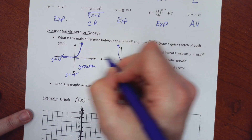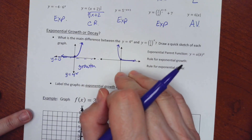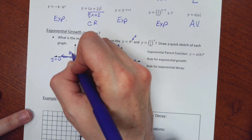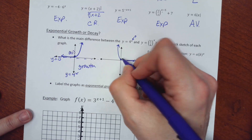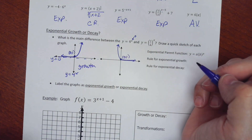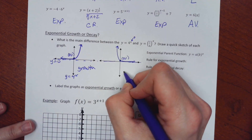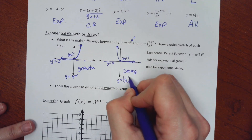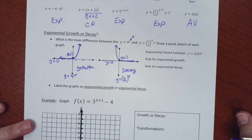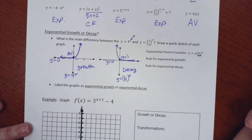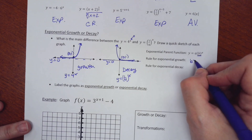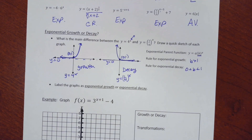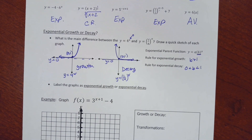The y-intercept is important: if you haven't moved the graph left, right, up, or down, plugging 0 in gives 4^0 = 1, so it has a y-intercept of (0, 1). Same thing for one-fourth: to the 0 power is 1, so (0, 1). For growth, the b value is bigger than 1. For decay, the b value is between 0 and 1 — positive but less than 1.